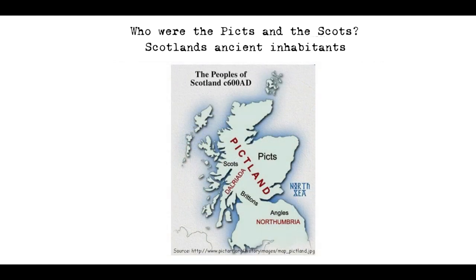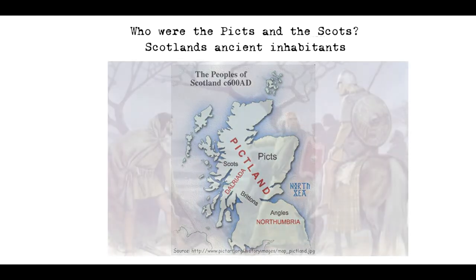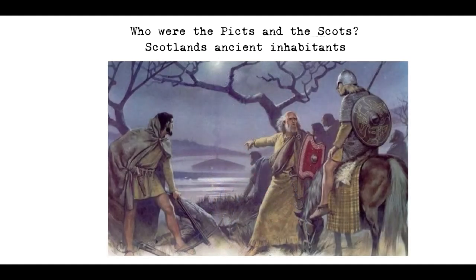Another major difference between the Picts and Scots is their political and social organisation. The Picts were not a united nation, and their society was organised into separate tribes and kingdoms. The Pictish kingship was not always hereditary, and kings had to prove themselves in battle to maintain their authority. The Scots, on the other hand, had a more centralised and bureaucratic form of government, with the king at the head of the kingdom. The kings of the Scots were usually succeeded by their own brothers or cousins, a practice known as agnatic seniority.